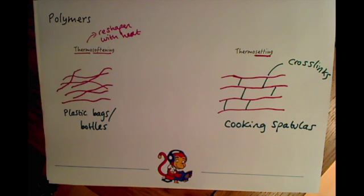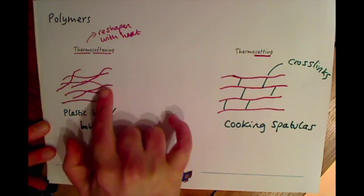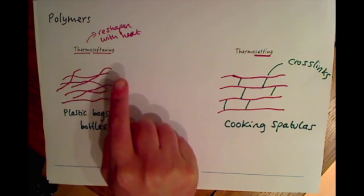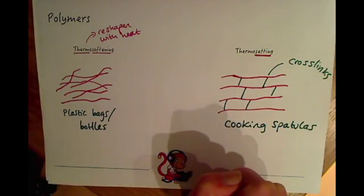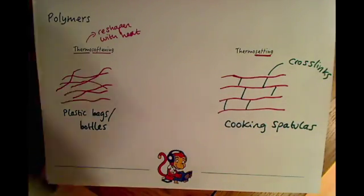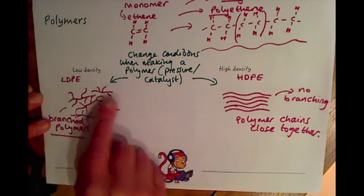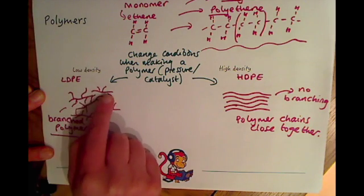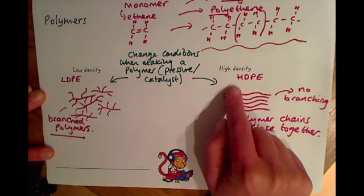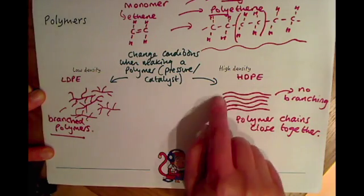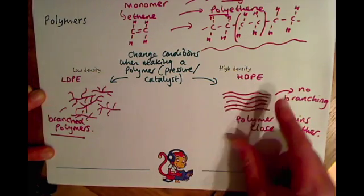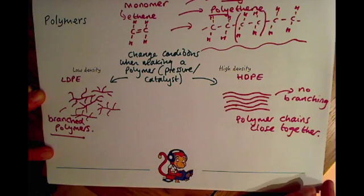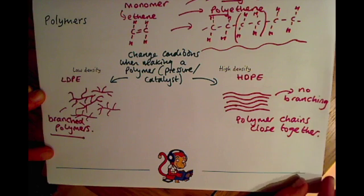So that's the basics for polymers: thermosoftening can be reshaped with heat and can be recycled, whereas thermosetting cannot because of the cross-links between the chains. Looking back at low and high density: low density polymers have lots of branching off the chain so they can't be squeezed together, whereas high density polymers have no branching so the chains can be closely packed together — that's what gives you a high density polymer.